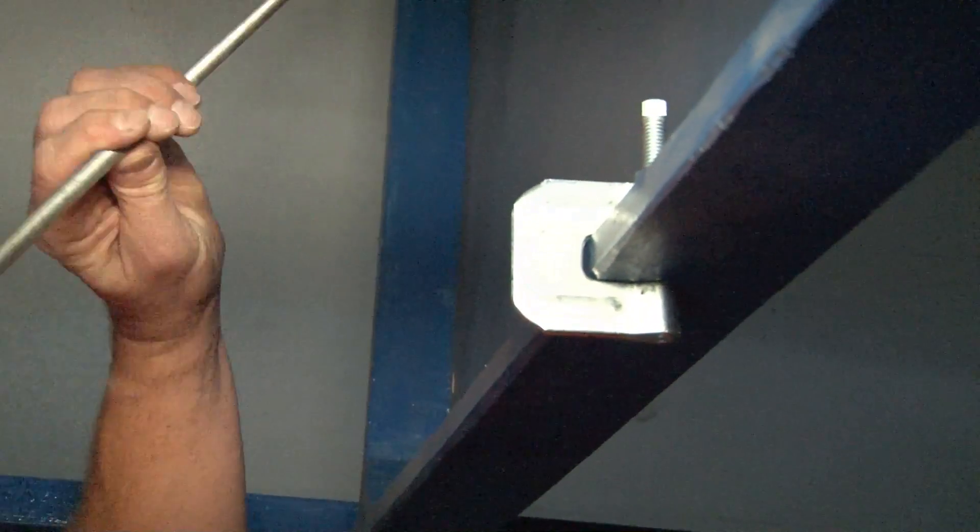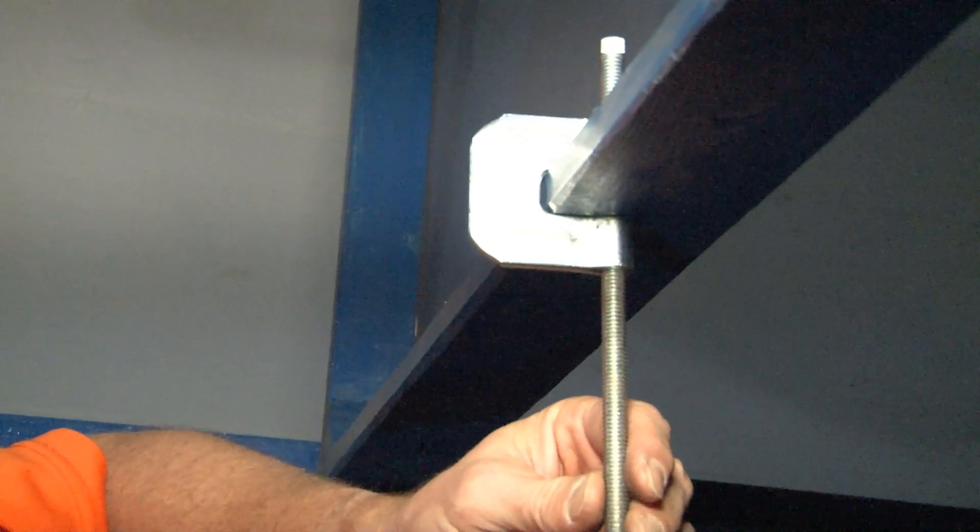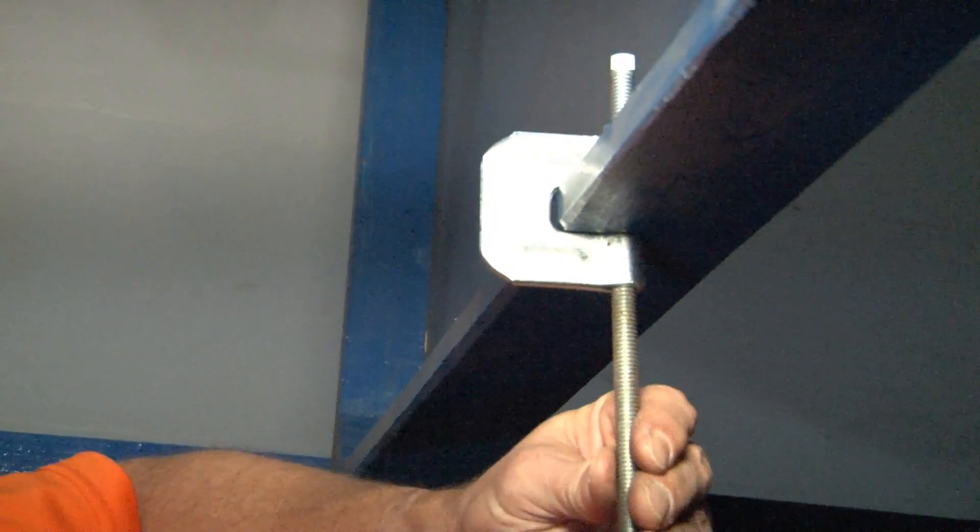You're now ready to install your 3/8 inch, 5/8 or 3/4 inch threaded rod. You simply align the threaded rod with the threads in the bottom of the beam clamp and then screw it in like so.